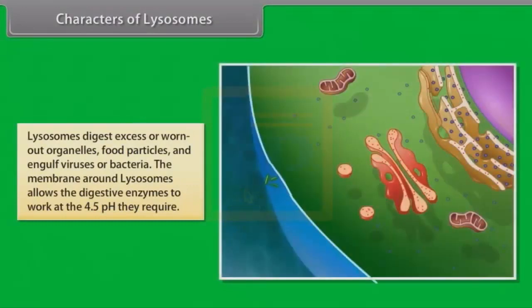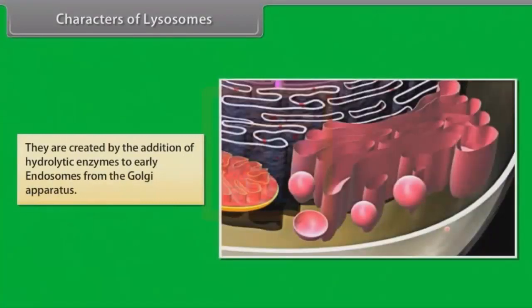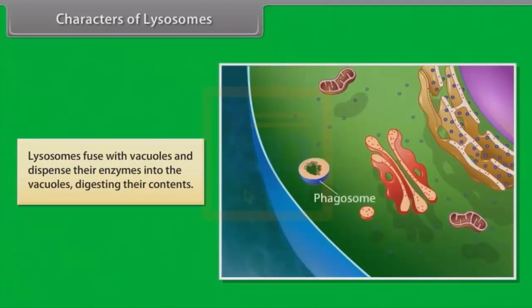Lysosomes digest excess or worn-out organelles, food particles, and engulf viruses and bacteria. The membrane around lysosomes allows the digestive enzymes to work at the 4.5 pH they require. They are created by the addition of hydrolytic enzymes to early endosomes from the Golgi apparatus. Lysosomes fuse with vacuoles and dispense the enzymes into the vacuoles, digesting their contents.